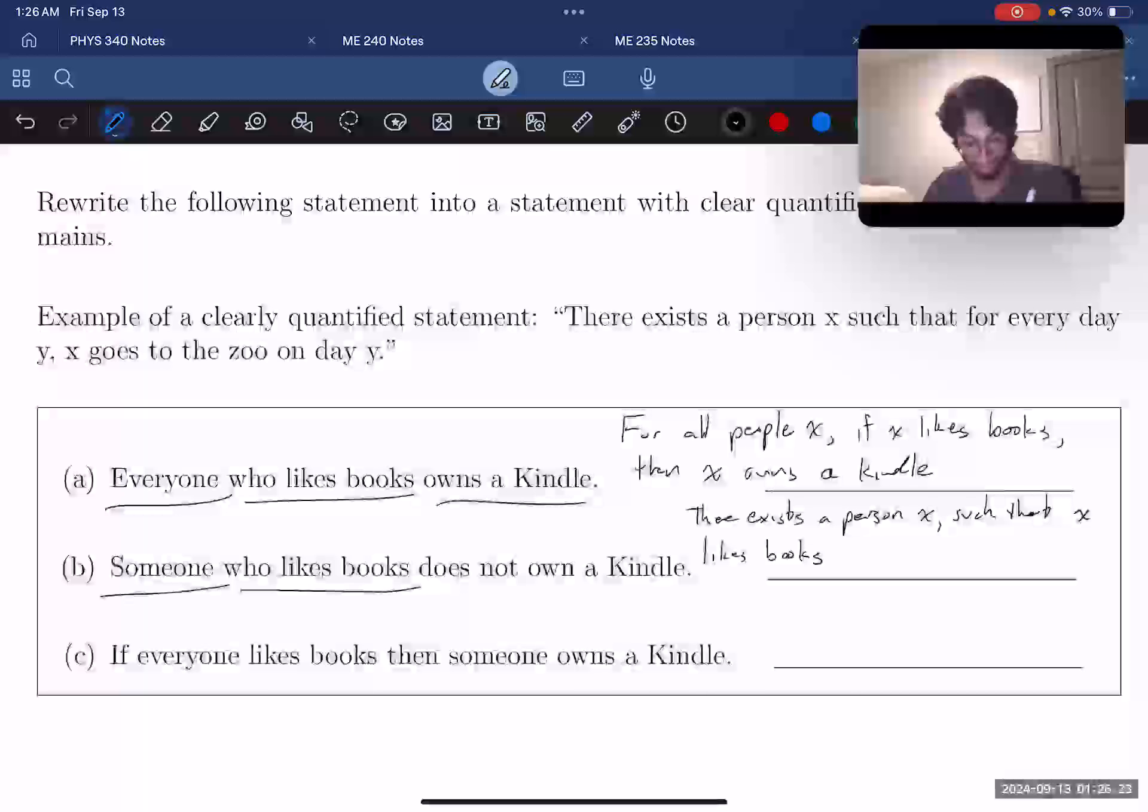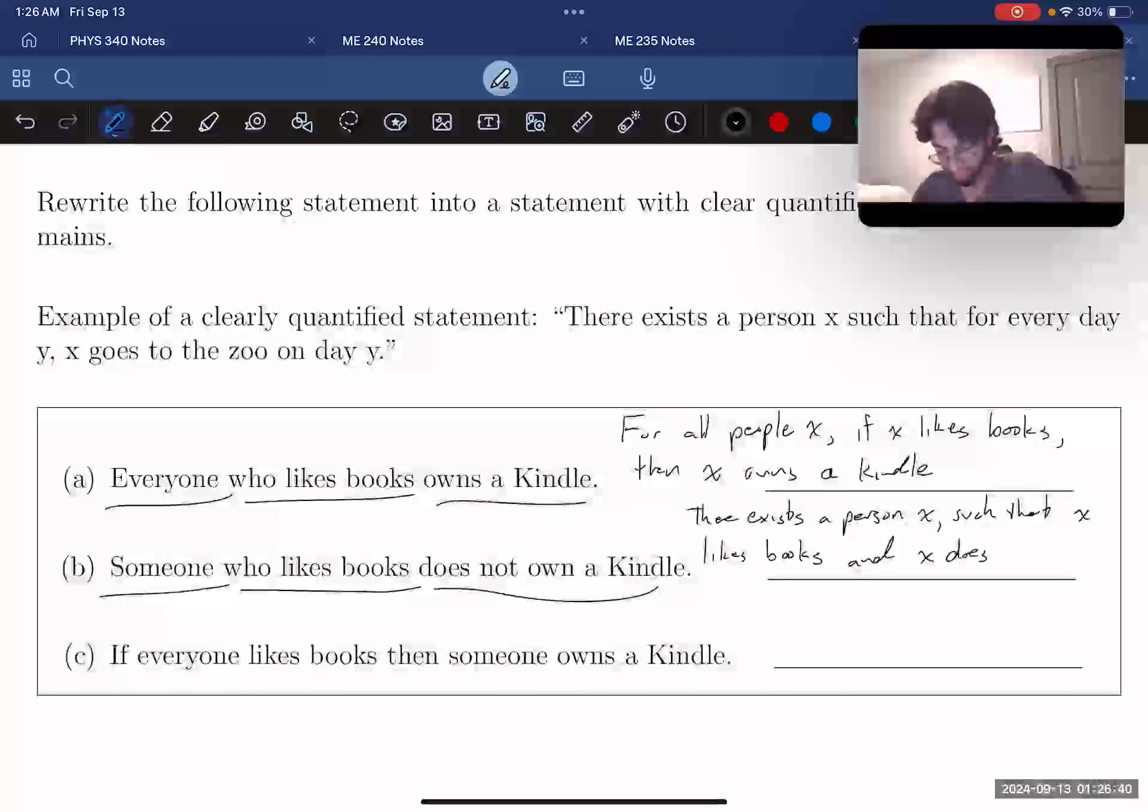And then let's look at the rest of the statement. We're told that the person who likes books doesn't own a Kindle. So this person X must both like books and also not own a Kindle. And that means we need the and here. So X likes books, and X does not own a Kindle.